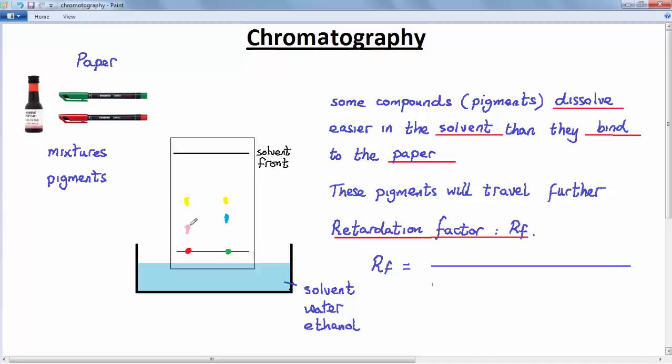We can quantify this characteristic using something called the retardation factor, or RF factor. And the RF factor is easy to calculate. It's the distance traveled from the pencil line by a pigment divided by the distance traveled by the solvent. For example, if we wanted to calculate the RF factor for the yellow pigment, then we measure this distance and we divide it by this distance. This is the distance traveled by the solvent on its own from the pencil line.